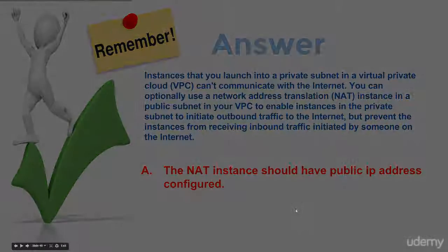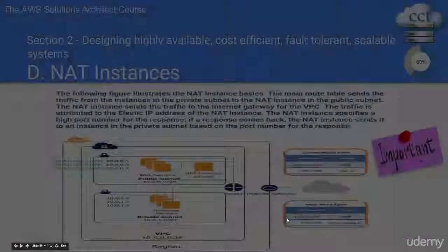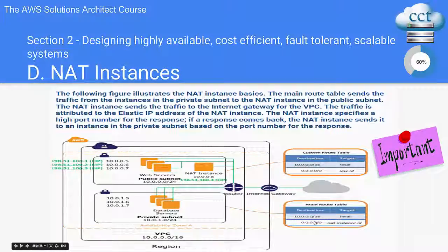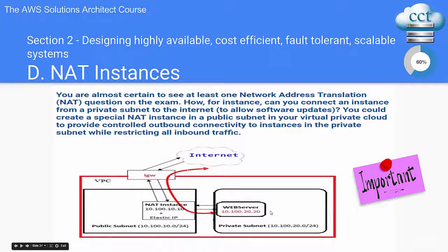It's worth going back to the diagram again — I think this one explains it best. You have a private subnet; it doesn't have a connection to the internet by default. How do you get a connection from a private subnet out to the internet? You create a special NAT instance in a public subnet. That's what you do.